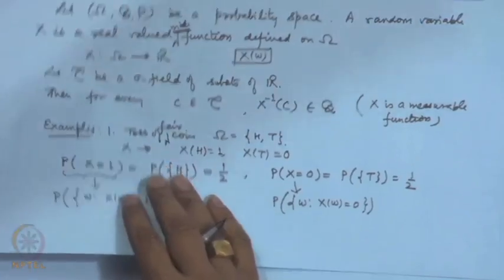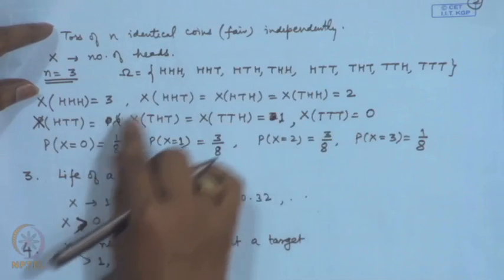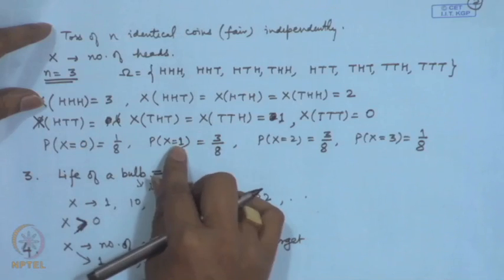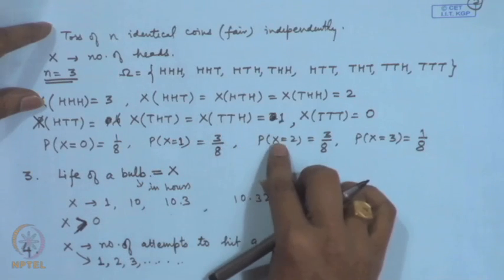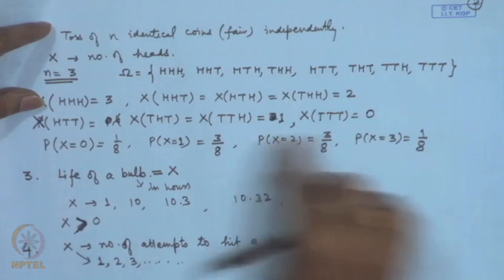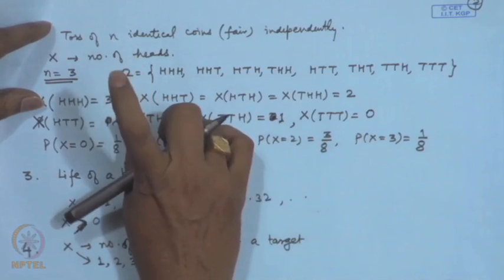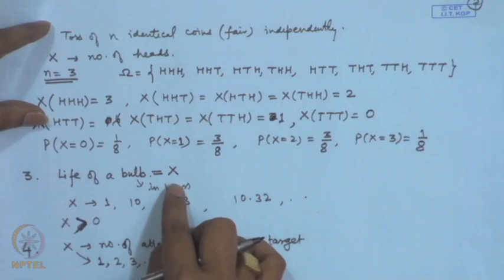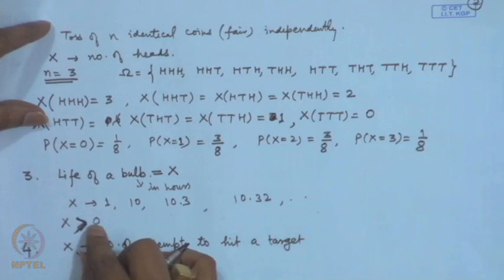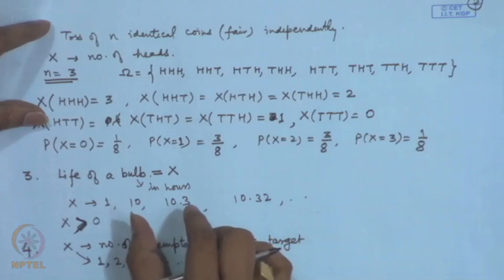Consider tossing 3 identical coins independently. The random variable X takes 4 possible values: 0, 1, 2, and 3. P(X=0) = 1/8, P(X=1) = 3/8, P(X=2) = 3/8, P(X=3) = 1/8. Summing these probabilities gives 1. This allotment of probabilities is the probability mass function for this random variable X. On the other hand, for the life of a bulb — a continuous random variable — we cannot allocate probabilities to each point; instead we allocate density or probabilities for intervals, giving a probability density function.